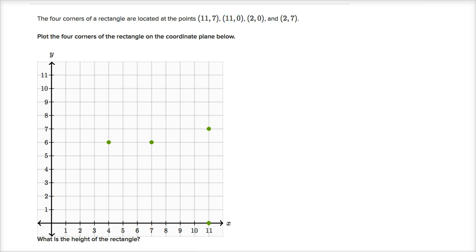One way to think about it, start at the origin, you move 11 to the right, and you move zero up. So this is going to sit on the x-axis right over there, (11, 0).